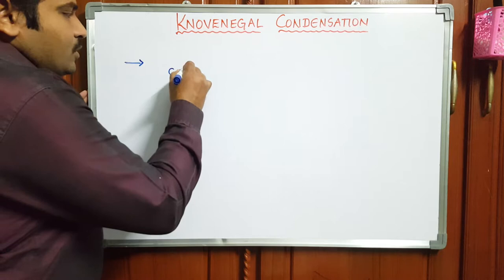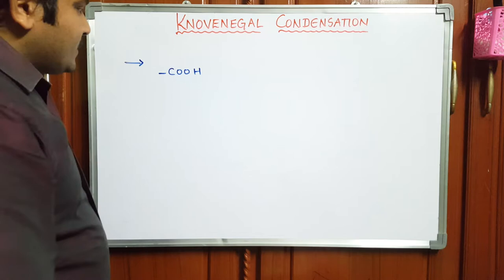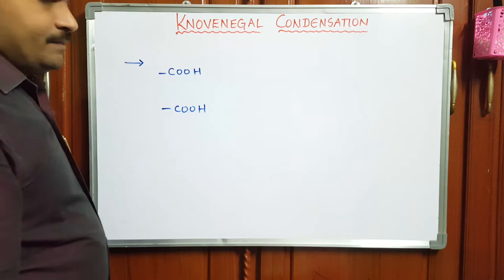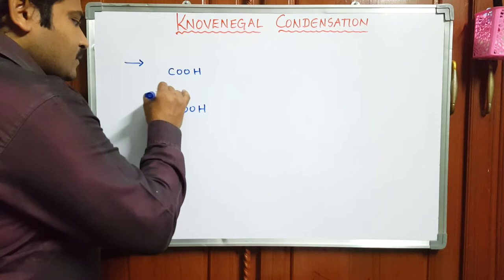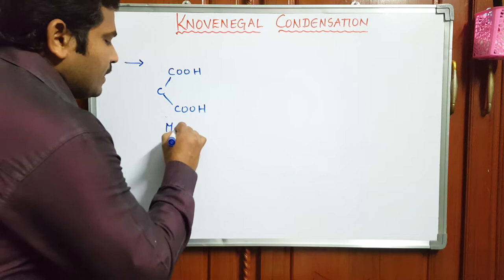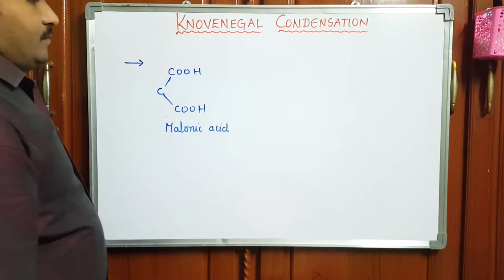You know very well about the functional group called carboxylic acid. This is another carboxylic acid moiety. If both the carboxylic acids are separated by one particular carbon atom, it is called malonic acid. What is this dicarboxylic acid name? Malonic acid.